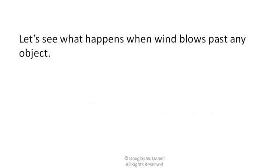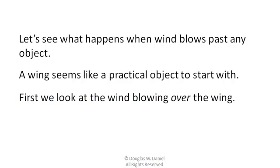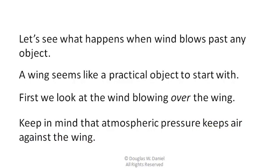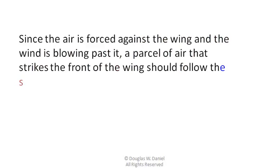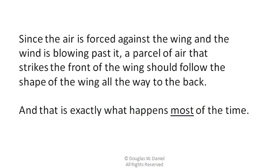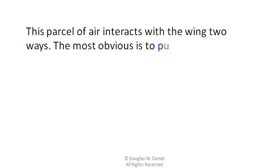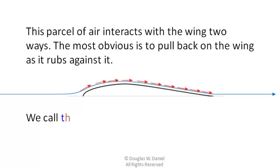Let's see what happens when wind blows past any object. A wing seems like a practical object to start with. We look at the wind blowing over the wing. Keep in mind that atmospheric pressure keeps air against the wing. Since the air is forced against the wing and the wind is blowing past it, a parcel of air that strikes the front of the wing should follow the shape of the wing all the way to the back. That's exactly what happens most of the time. This parcel of air interacts with the wing two ways. The most obvious is to pull back on the wing as it rubs against it.